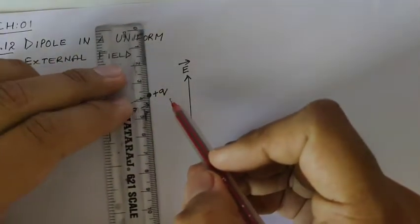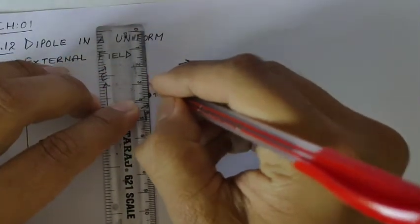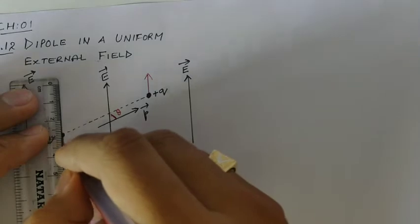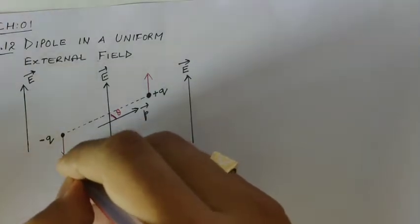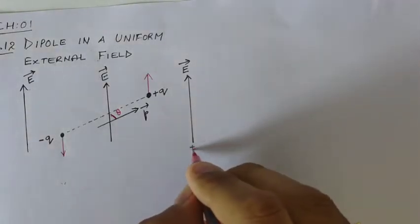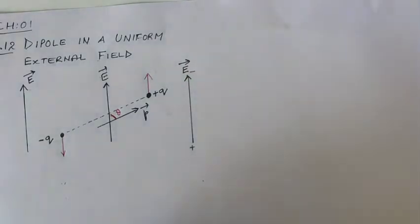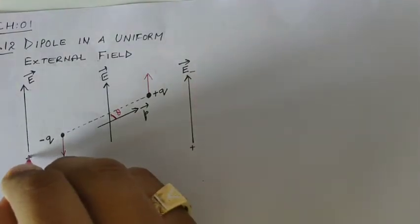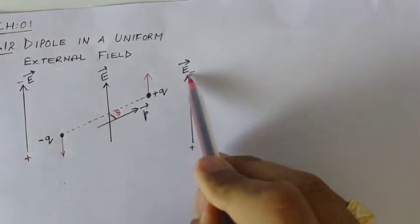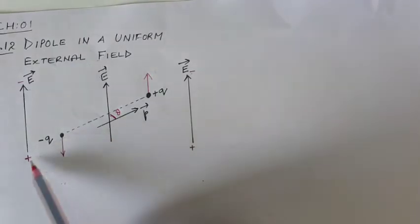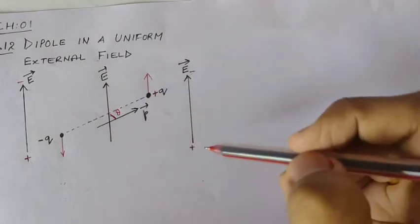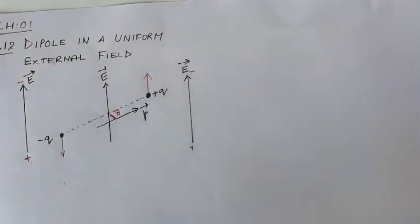The electric field force on +q is in the upper direction, and the electric field force on -q is in the lower direction. Electric field lines go from positive to negative — the negative charge is attracted, so the force on the negative charge is in the direction toward the positive side.